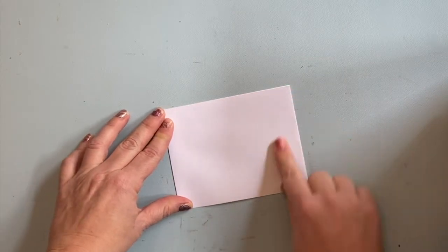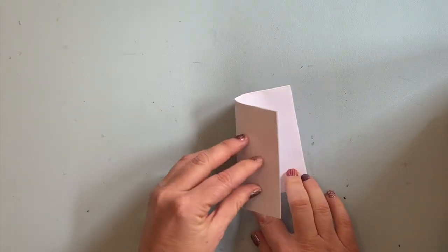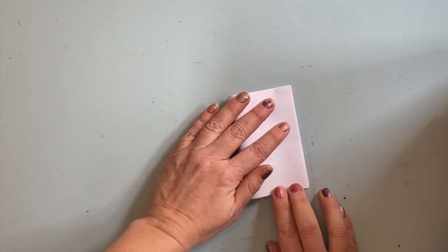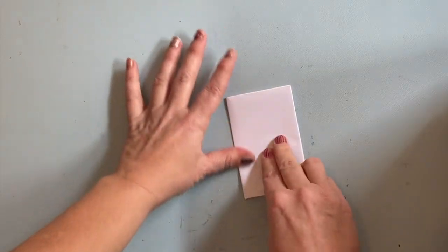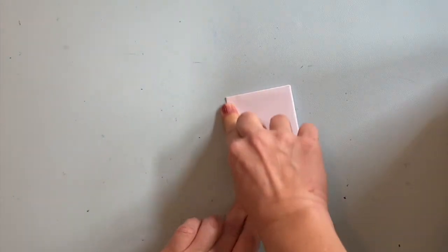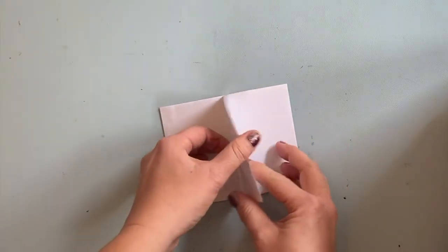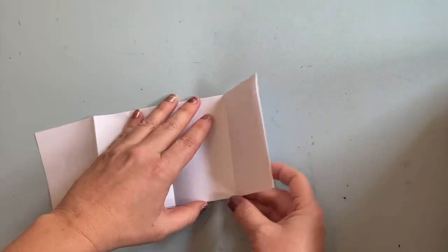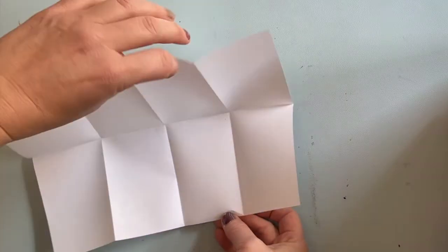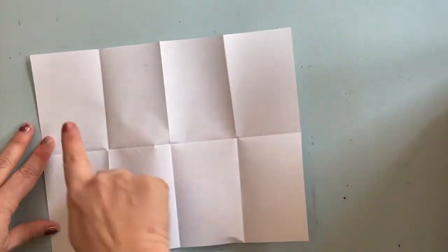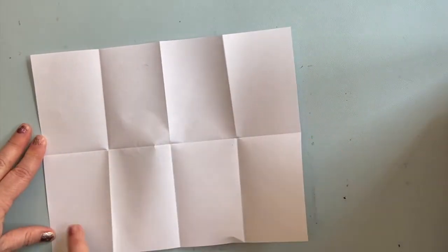And one more time in half again. This will be the final size of your book. Give it really good creases. I'm going to open it up again all the way. You should have one, two, three, four, five, six, seven, eight smaller rectangles.